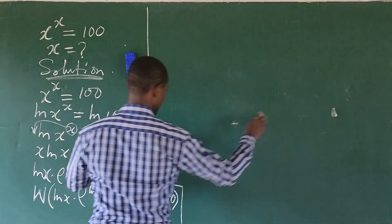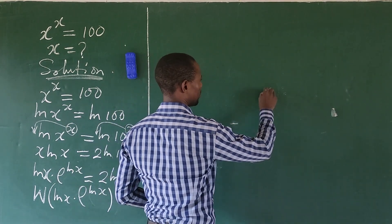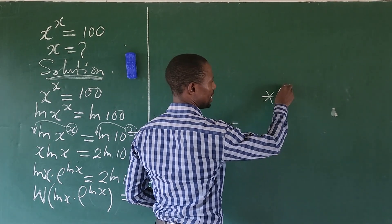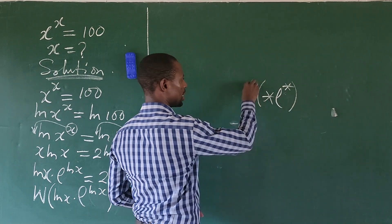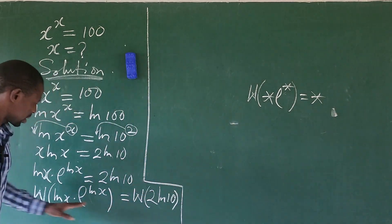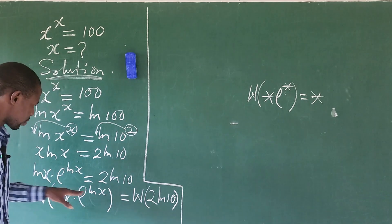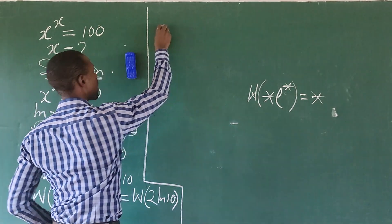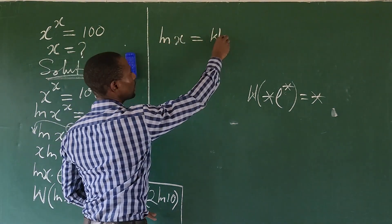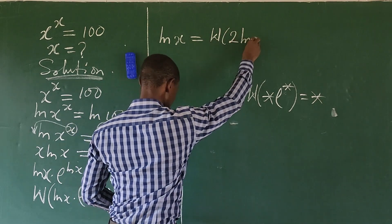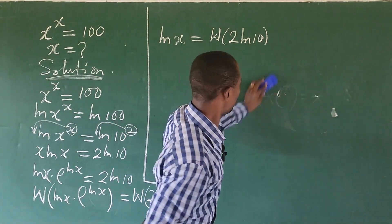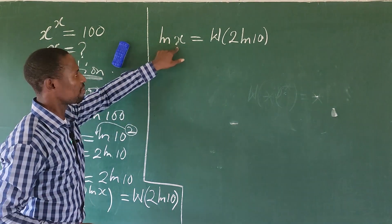Remember what the Lambert W function says: if you have a times e to the power of a and you take the Lambert W function, this gives you back a. So applying that here, since these are the same quantity, we end up with LN of x equal to the Lambert W function of 2 LN of 10.